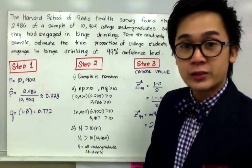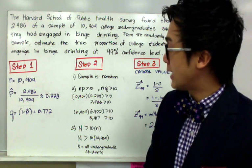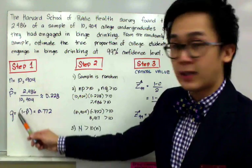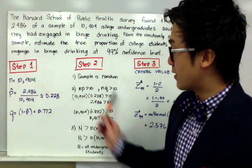For number two, we need to satisfy the rule of thumb number two, which is NP greater than 10 and NQ greater than 10. Using N, P, and Q, we're able to satisfy the second conditions.